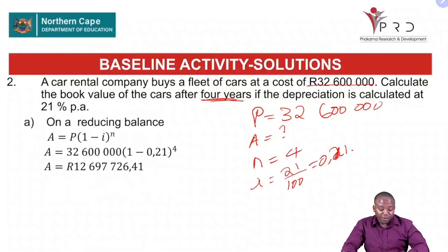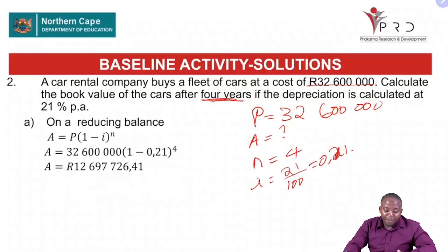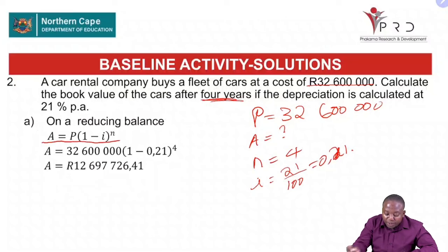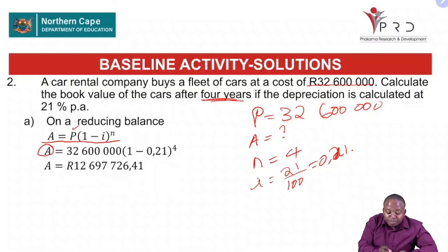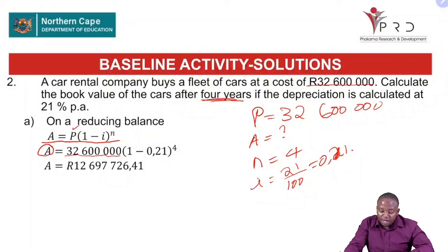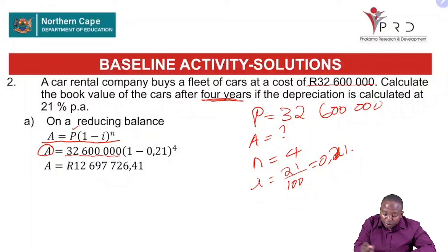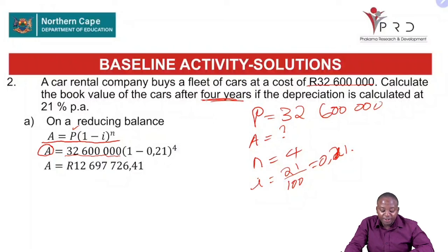We plug in the values: A equals 32,600,000 times (1 minus 0.21) raised to the power 4. We punch everything into the calculator and find that the book value of the cars after four years is 12,697,726.41.